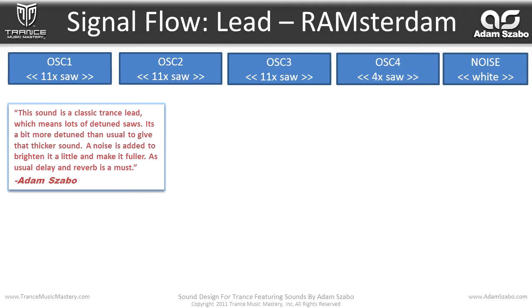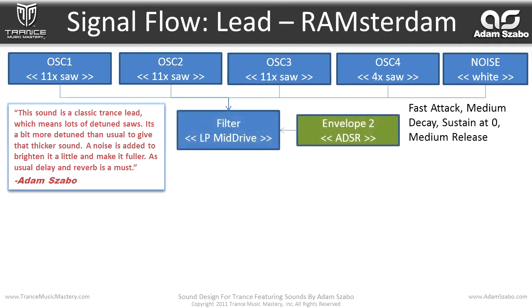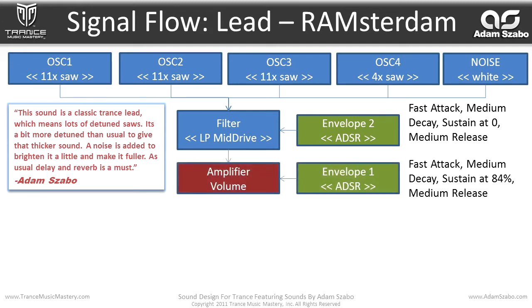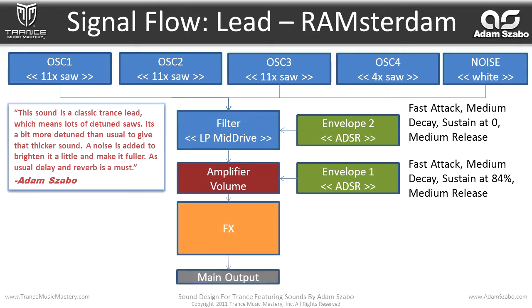The first three oscillators are 11-stacked saw waves, and the fourth oscillator is a quad saw wave. The noise generator is generating white noise. All of these are mixed and flow into the filter, configured as LP mid-drive, with the cutoff frequency modulated by envelope two with fast attack, medium decay, sustain at zero, and medium release. That then flows into the amplifier with volume modulated by envelope one with fast attack, medium decay, sustain at 84%, and medium release. That flows into the effects and then to the main output.